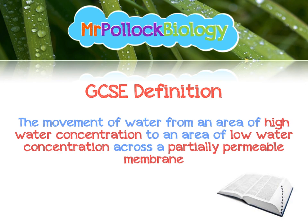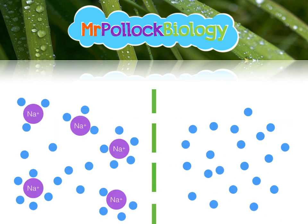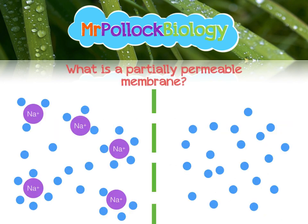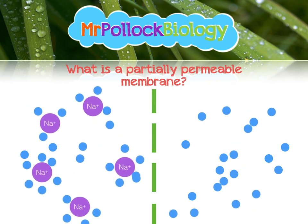What is a partially permeable membrane? It's something that lets certain molecules through, but not others. So the partially permeable membrane in green separates the two sections here — the left and the right. The sodium ions can't pass through, but the water molecules in blue can. That's basically it — it lets certain things through, but not others.